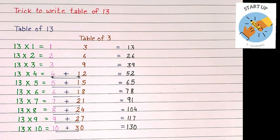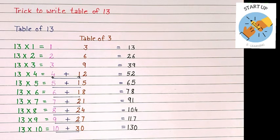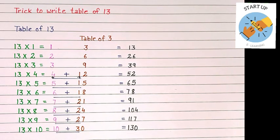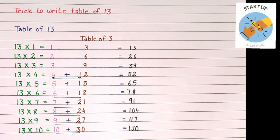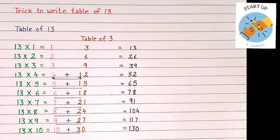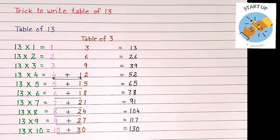8 plus 2 is equal to 10 and 4 at the end, 104. 9 plus 2 is equal to 11 and 7 at the end. Now 10 plus 3 is equal to 13 plus 0 at the end, 130. To learn more such tricks to write other tables,